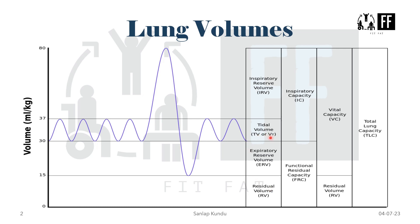First, we will talk about the tidal volume (TV). It is the volume of air breathed in and out of the lungs during normal quiet respiration — there is no forceful breathing involved. The normal value of tidal volume is 500 milliliters, or half a liter.